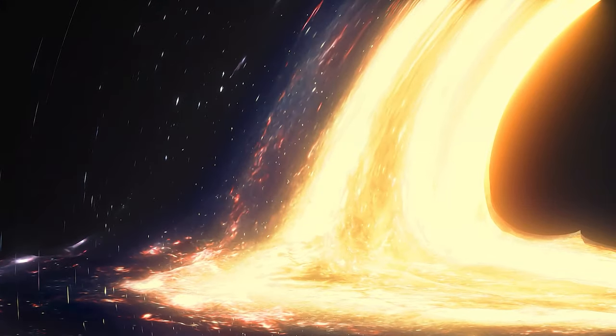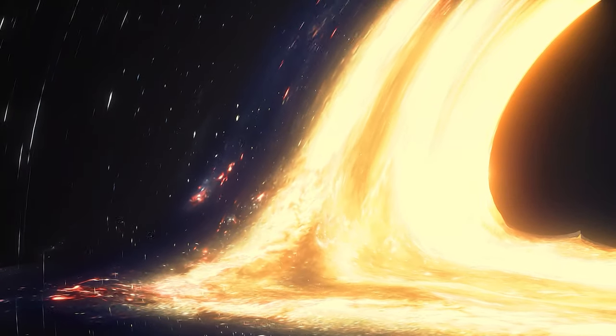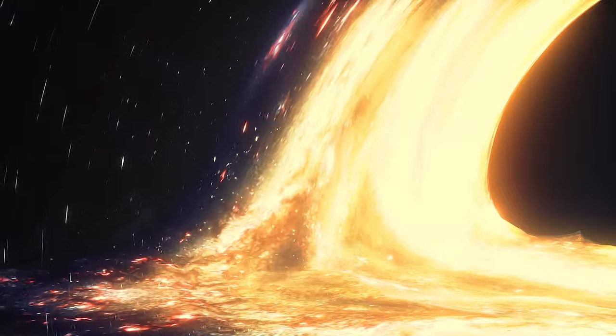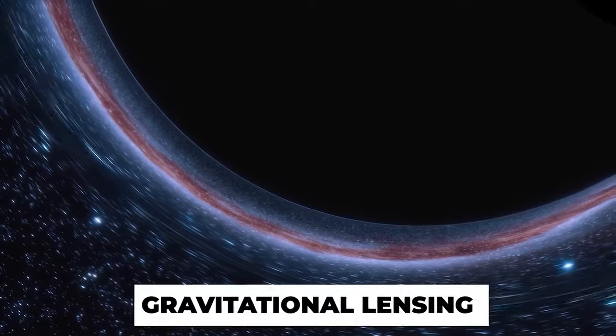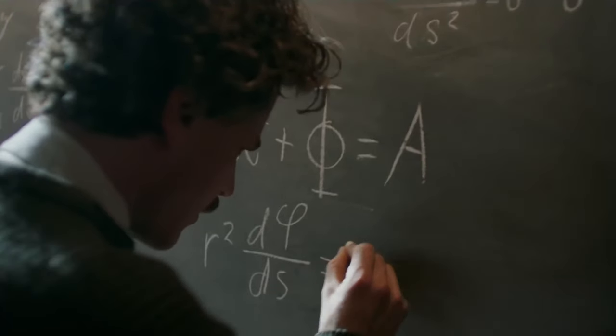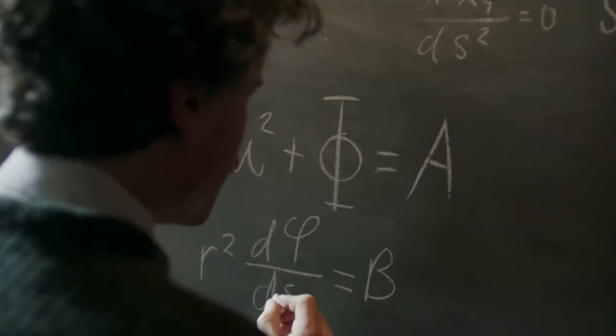The bright ring around the black hole is caused by the intense gravitational pull of the black hole, which warps the surrounding space and time. This phenomenon, known as gravitational lensing, was first predicted by Einstein's theory more than a century ago.